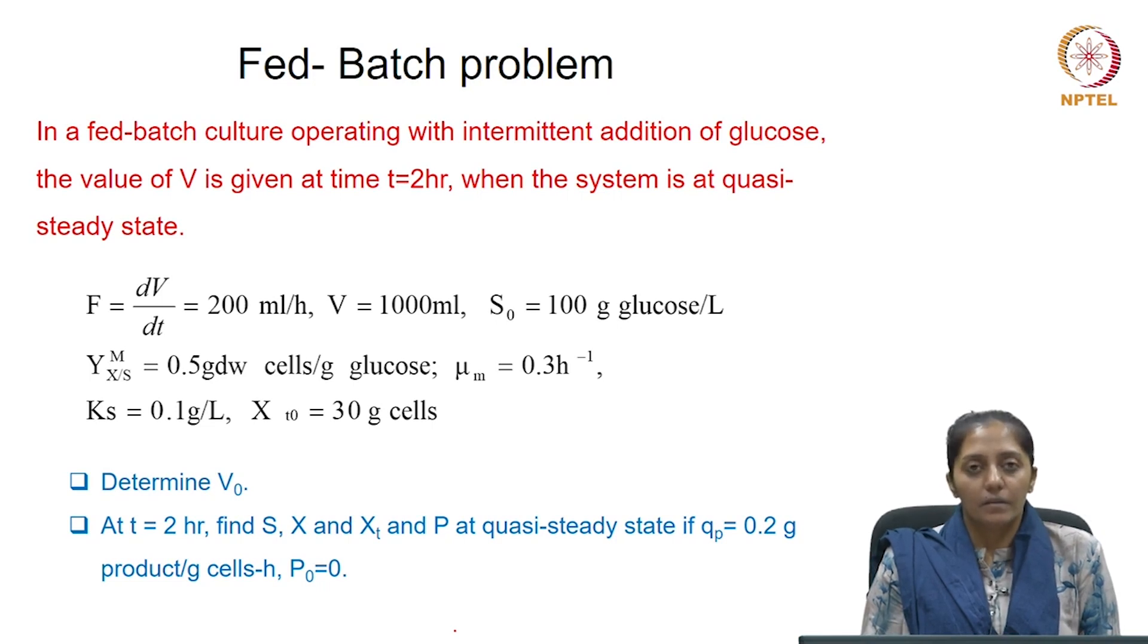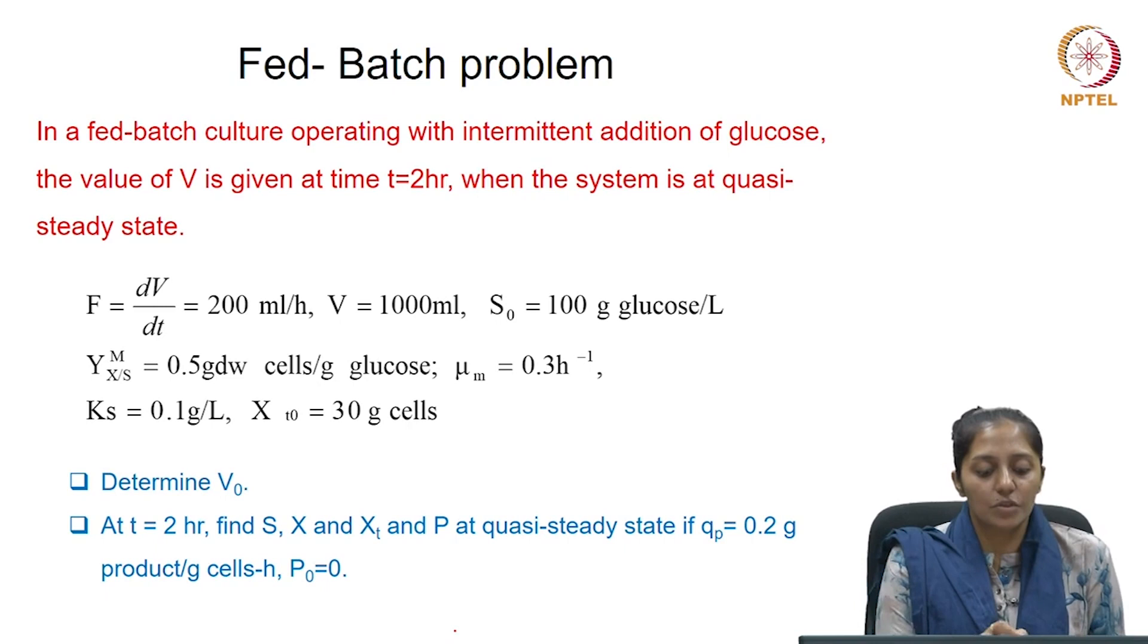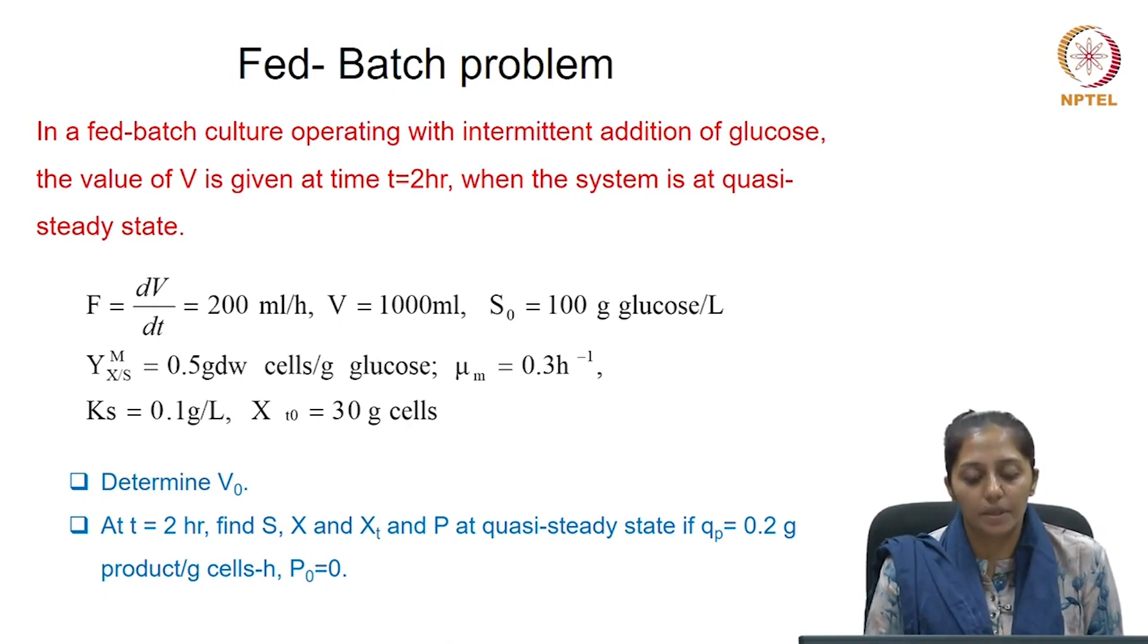Now, the volumetric flow rate is given as 200 milliliters per hour, and the feed concentration in this quasi-steady state fed-batch process is 100 grams glucose per liter.